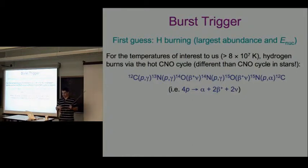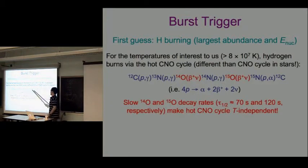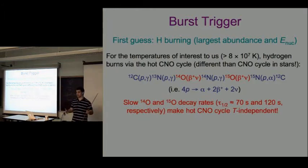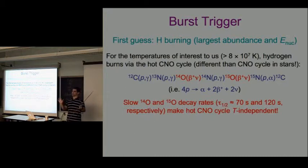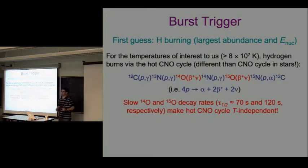Very importantly, for the conditions of most Type I X-ray bursts, these slow beta decays totally dominate the rate of this cycle. The beta decays are very slow relative to the thermonuclear reactions - the thermonuclear reactions happen on timescales much less than a second, while it takes maybe one to two minutes for these beta decays to occur. Beta decays are temperature independent - they don't care what the temperature is. So hydrogen burning via the hot CNO cycle is temperature independent and will not give you a thermal instability, since the rate is independent of temperature.